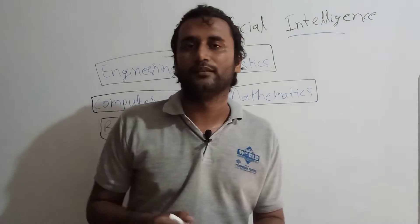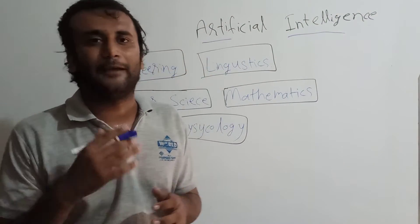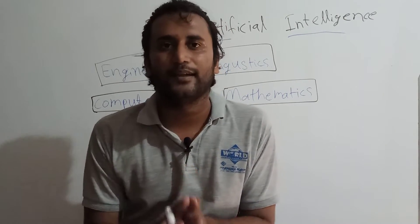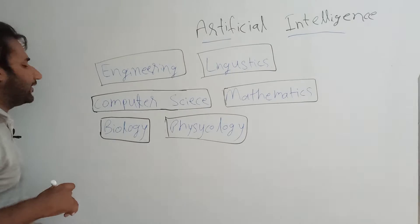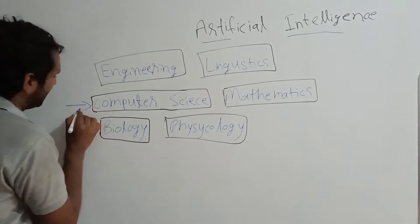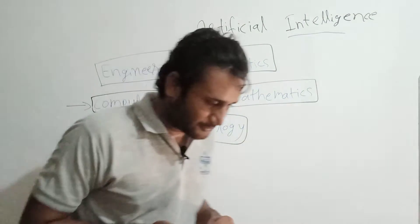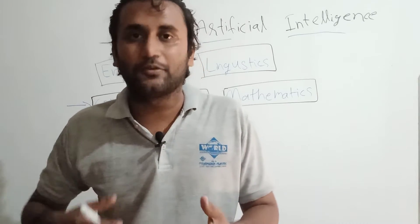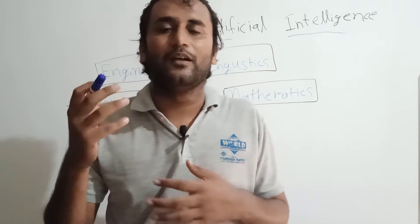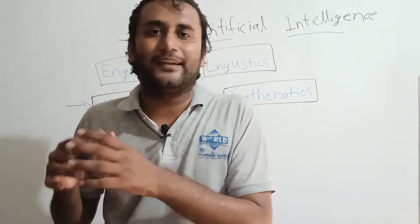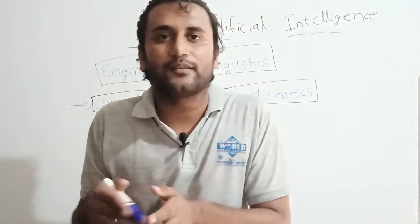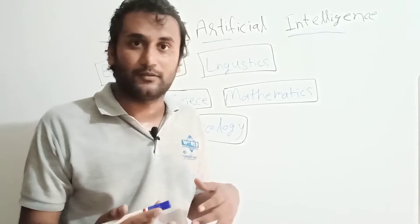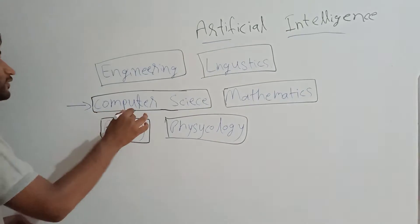Artificial intelligence is a mixture of many branches: computer science, engineering, linguistics, mathematics, psychology, and biology. Starting with computer science — whatever programming language we use to program our software or any artificially intelligent object must belong to computer science.